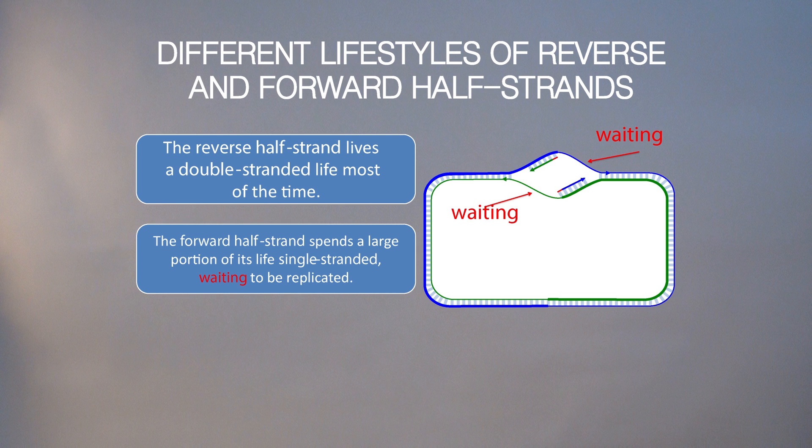The only thing we need to learn about this process to proceed with our algorithm is that reverse and forward half strands, the thick half strands and thin half strands, have very different lifetimes. The reverse half strands live a double-stranded life because they're constantly replicated. But the forward half strands spend a large portion of their life single-stranded because they have to wait until replication forks open until they start replication.